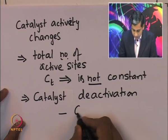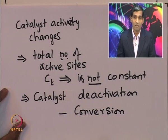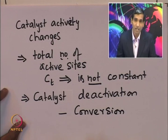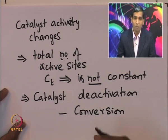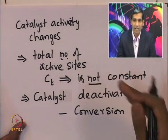Catalyst deactivation is known to strongly affect the conversion and, as a result, the performance of the reactor itself. It is a very serious problem, and it is very important to understand how this deactivation occurs and whether there are mechanisms or ways by which one can circumvent the catalytic deactivation process in a reactor. Deactivation is essentially a process by which the active sites present in the catalyst pore are somehow not available for the reactants to adsorb.